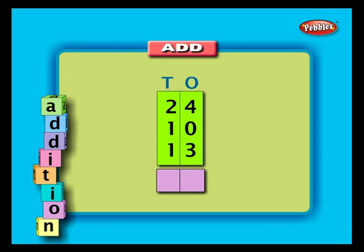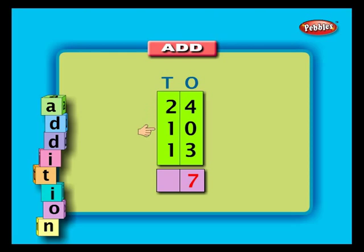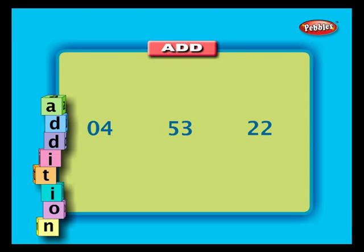Addition of three rows without carrying. Add 24, 10, and 13. Arrange them in a column. First, add the ones column — four plus zero plus three is seven. Write seven below the ones column. Next, add the tens column — two plus one plus one is four. Write four below the tens column.